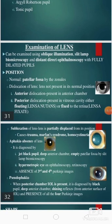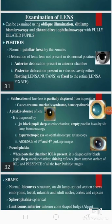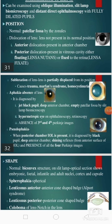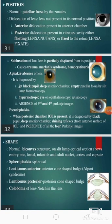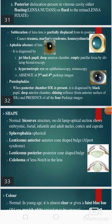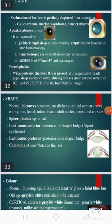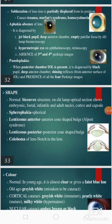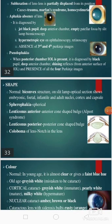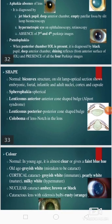Then we should do the examination of the lens. It can be examined using oblique illumination, slit lamp microscopy, and distant direct ophthalmoscopy with fully dilated pupils. We should see the position of lens — normally the patellar fossa is occupied by the lens. In dislocation, the lens is not in normal position; there may be anterior dislocation into the anterior chamber or posterior dislocation into the vitreous cavity, either floating or fixed to the retina. Subluxation means the lens is partially displaced from its position. Aphakia means absence of lens, diagnosed by jet black pupil, deep anterior chamber, empty patellar fossa on slit lamp, hypermetropic eye on ophthalmoscopy, and absence of third and fourth Purkinje images.